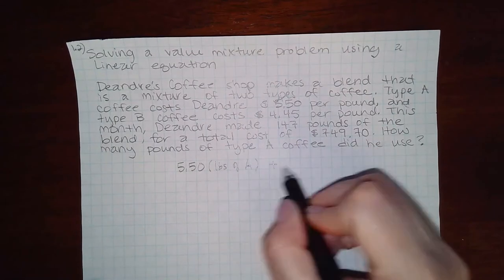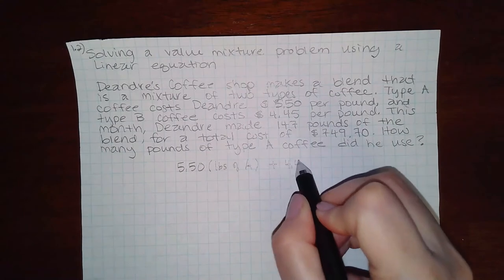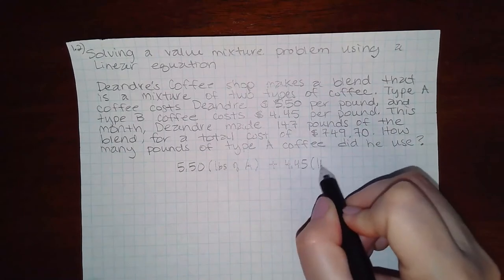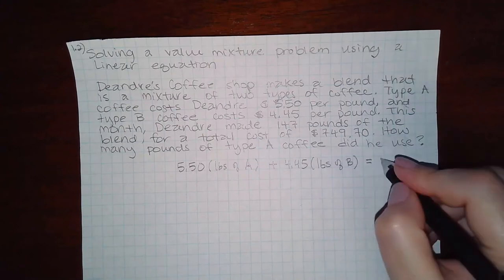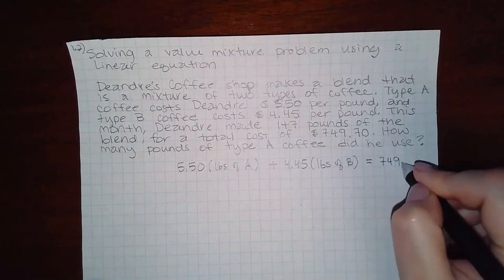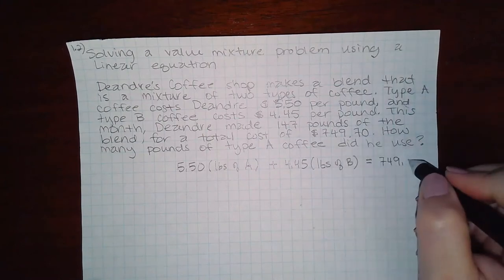plus it would be $4.45 times the number of pounds of type B. And that would equal our total of $749.70.